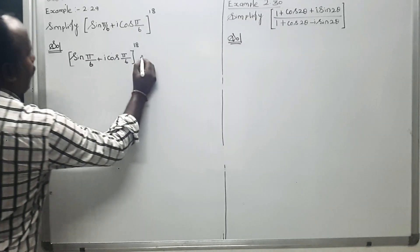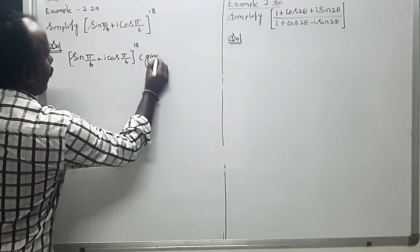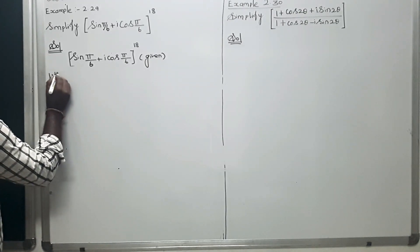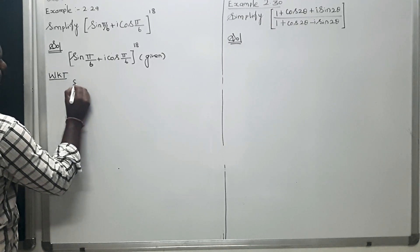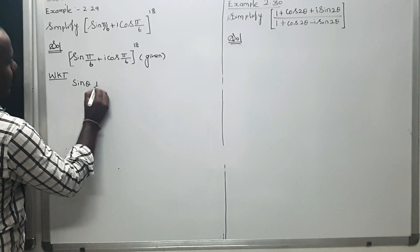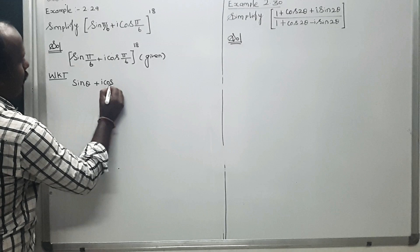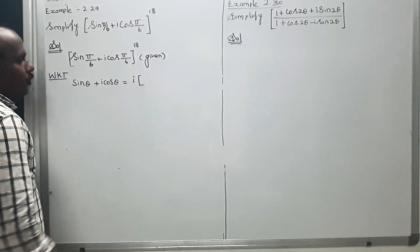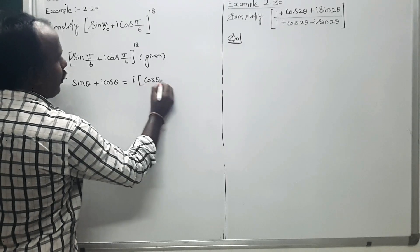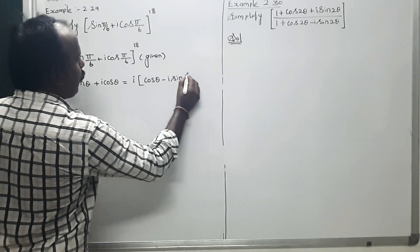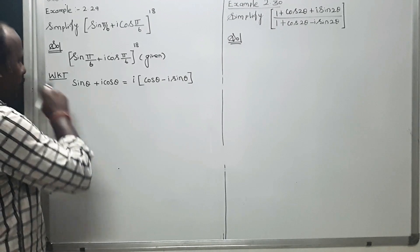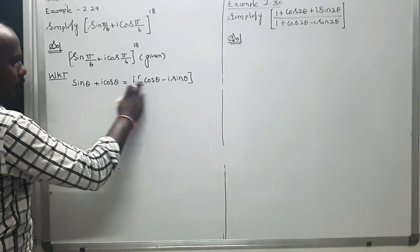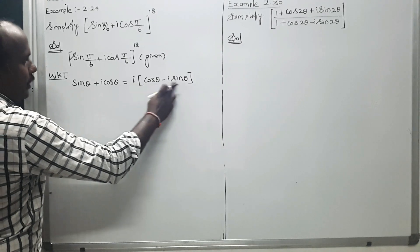We know that the result: sin θ + i cos θ is equal to i into (cos θ − i sin θ).